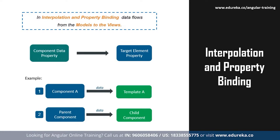Now talking about property binding — in property binding, the value flows from a component's property into the target element's property. Therefore, property binding can be used to read or pull data from the target elements, or to call a method that belongs to that target element. The events raised by the element can be acknowledged through event binding, which will be covered later. In general, the component property value will be set to the element property using property binding.